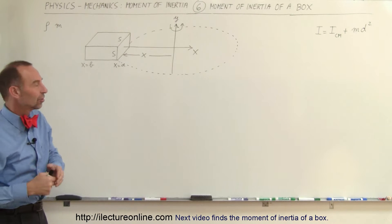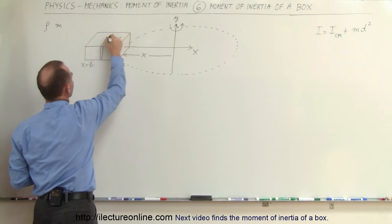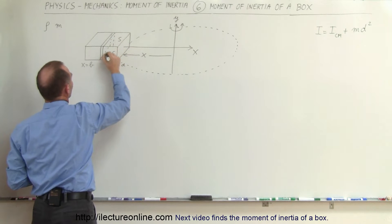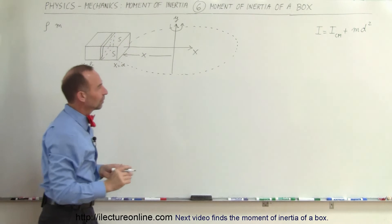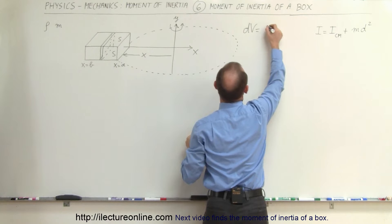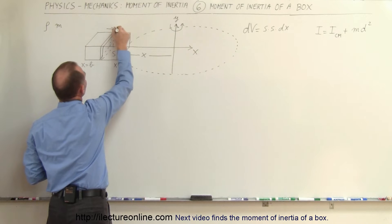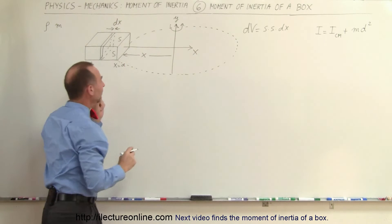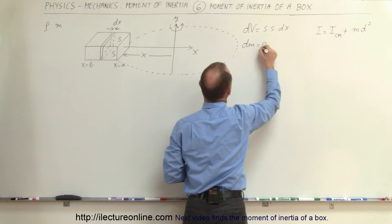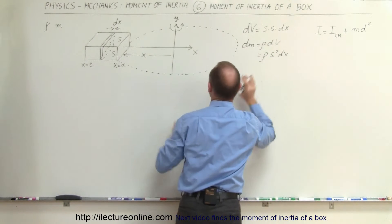Let's first do it simply through integration. We're going to take a small little slice of this box. The volume of this little slice, dv, would be equal to the height times the width times the thickness — so s times s times dx, because the thickness of that slice will be an infinitesimally thin dx. The mass of that little slice, dm, would be equal to the density times the volume — in this case, the density times s squared times dx.